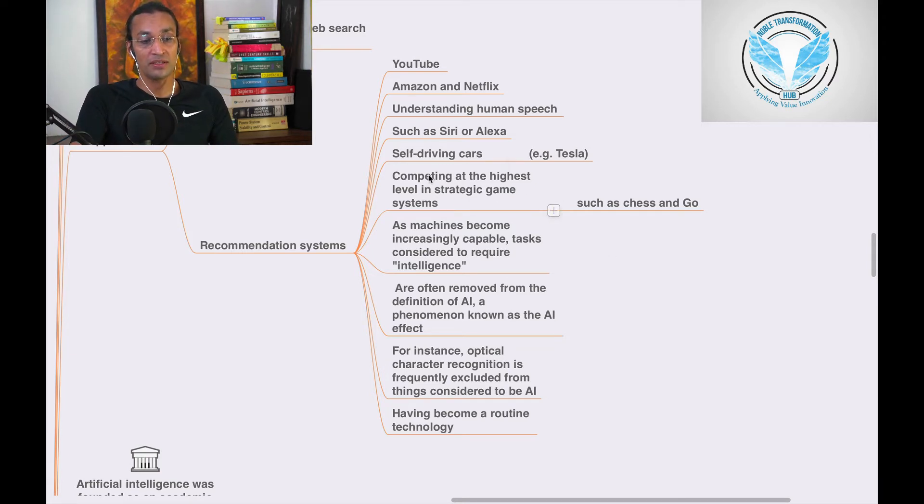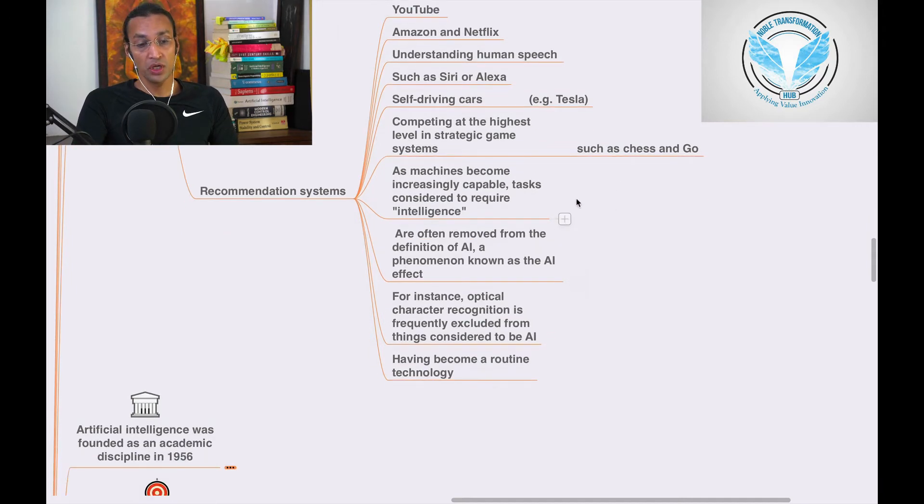AI is also used in competing at the highest level in strategic game systems such as chess and Go. Machines are becoming increasingly capable of tasks that are considered to require intelligence.